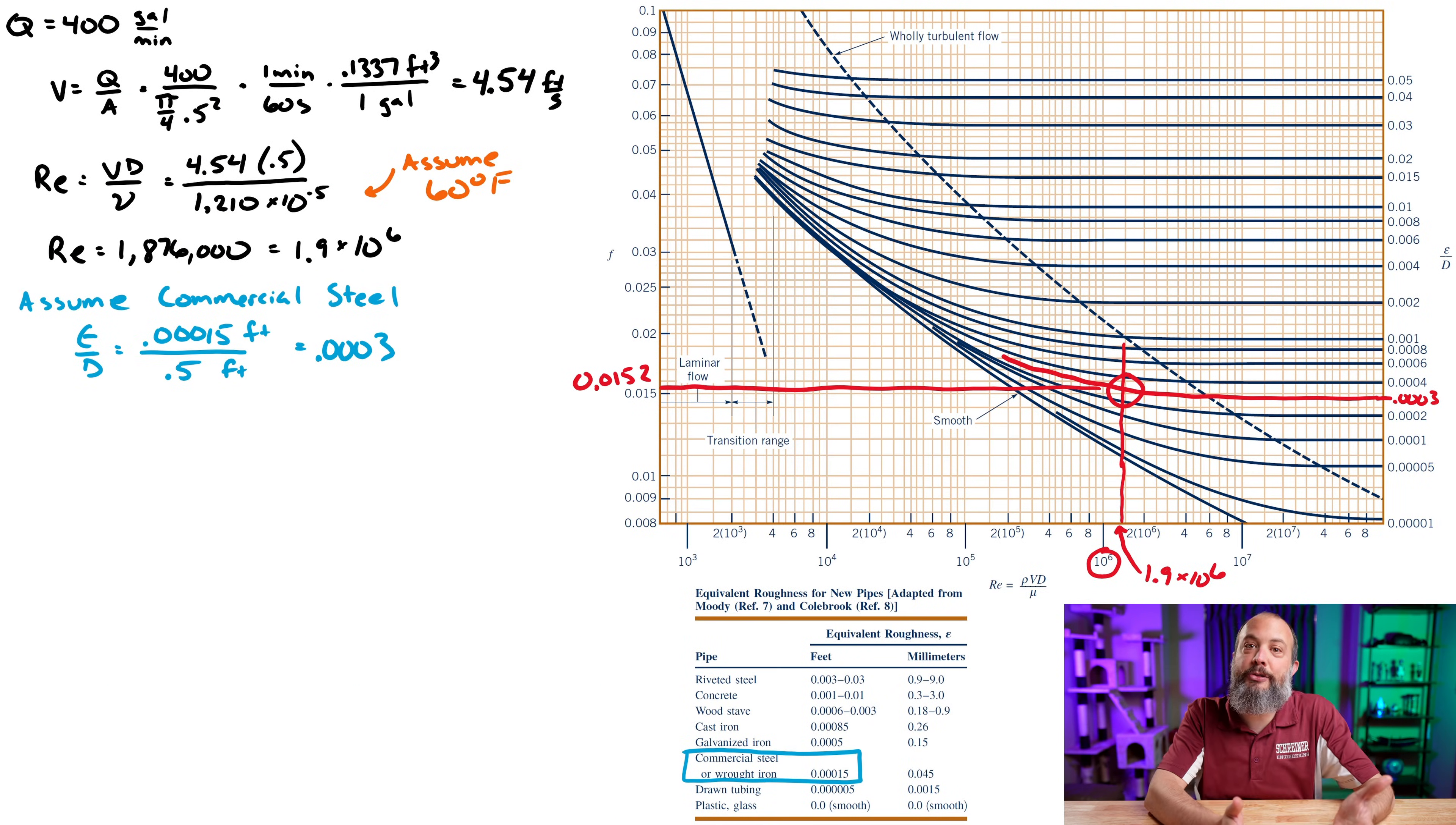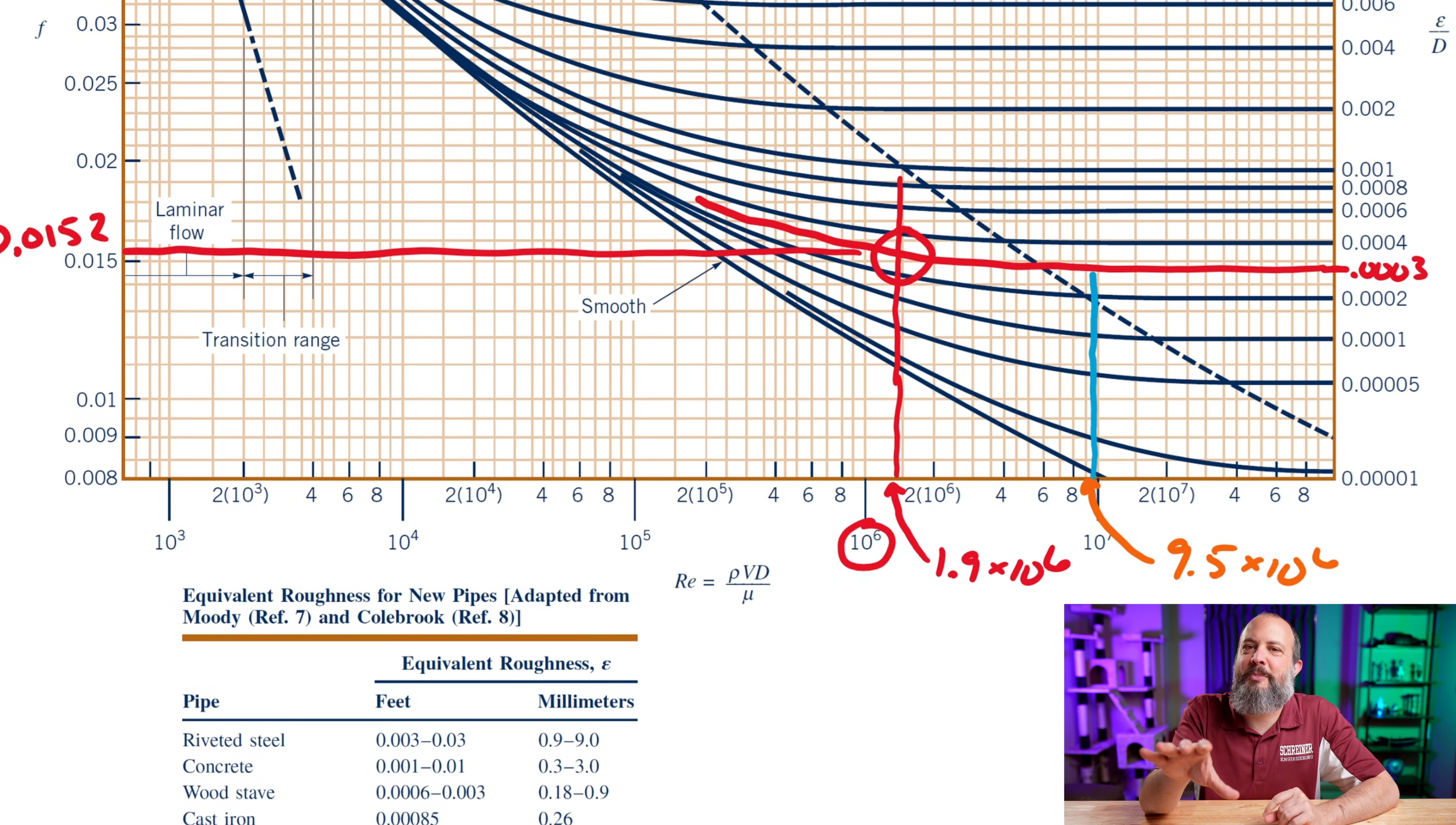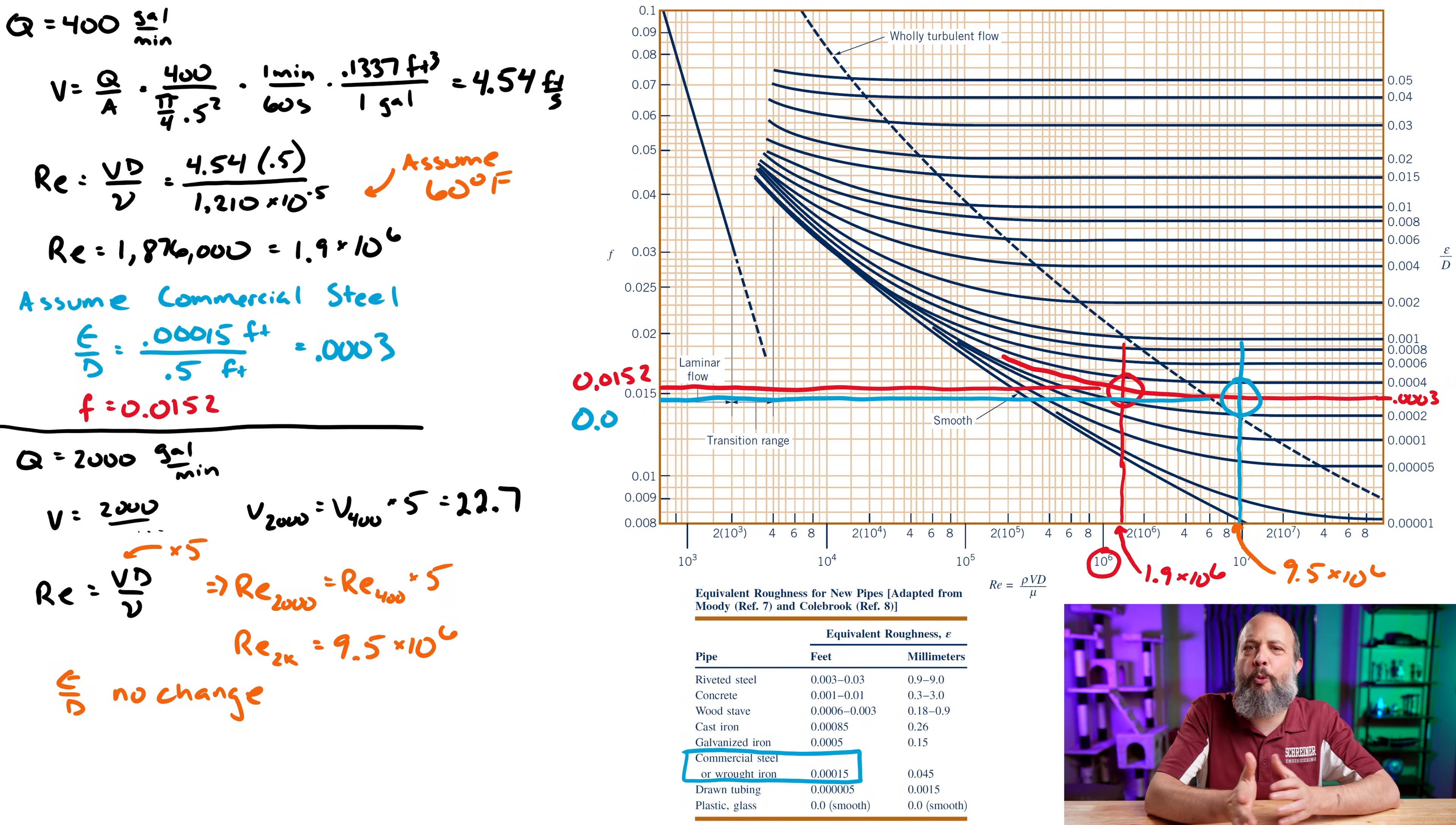So I'll repeat this process for 2000 gallons per minute, which is going to be a faster speed, right? It'll be five times faster. So 22.7 feet per second. And so the Reynolds number will also then be five times larger because same viscosity. So 9.5 times 10 to the 6. No change in the roughness coefficient. So 9.5 times 10 to the 6 is right next to where it says 10 to the 7 on the Moody diagram, because where it says 10 to the 7, that's 1 times 10 to the 7. And so this part of the curve is actually pretty flat. So I get a friction value here that's pretty close. Looks like about 0.0147.